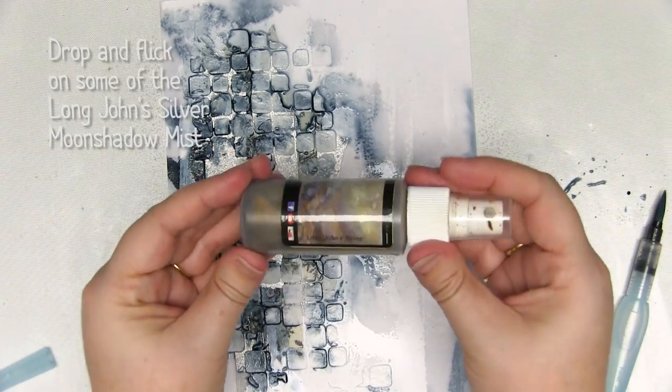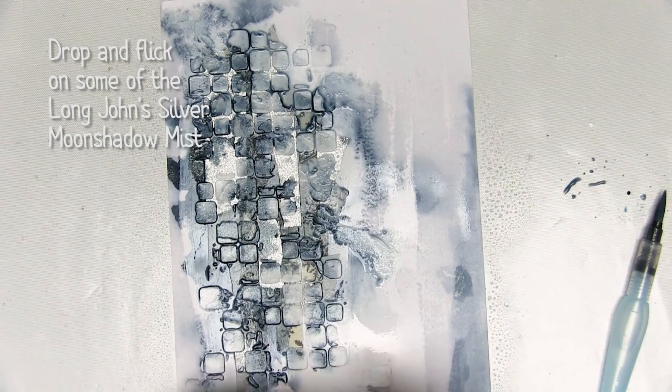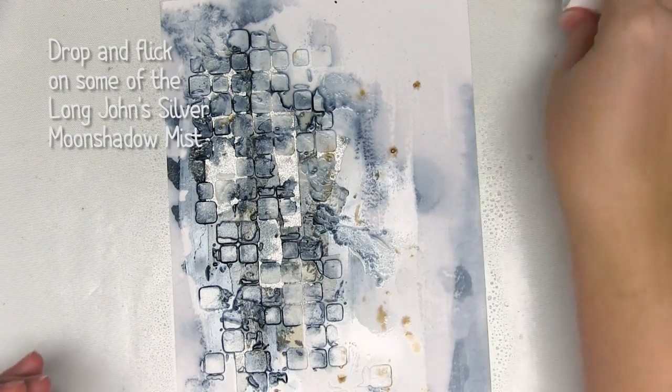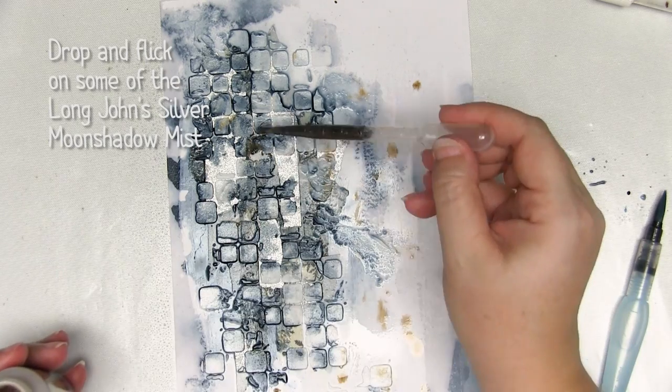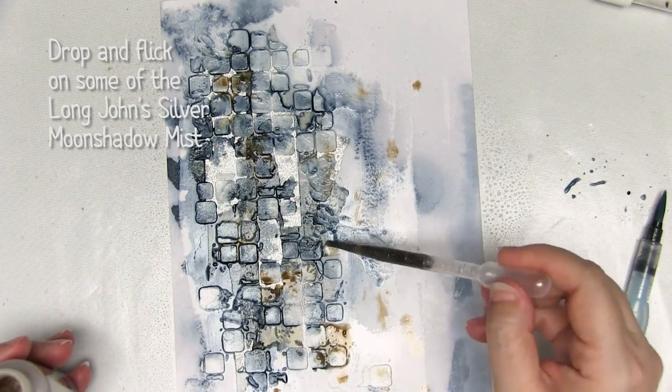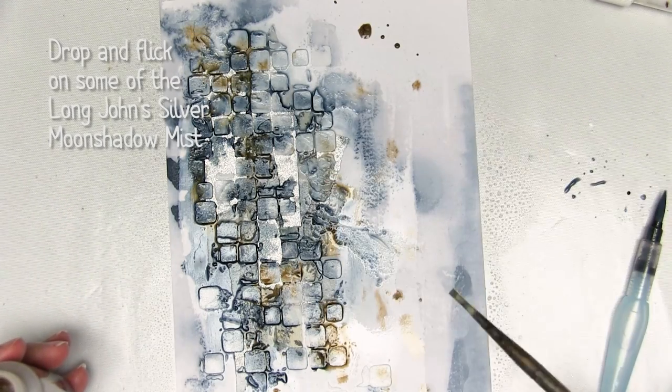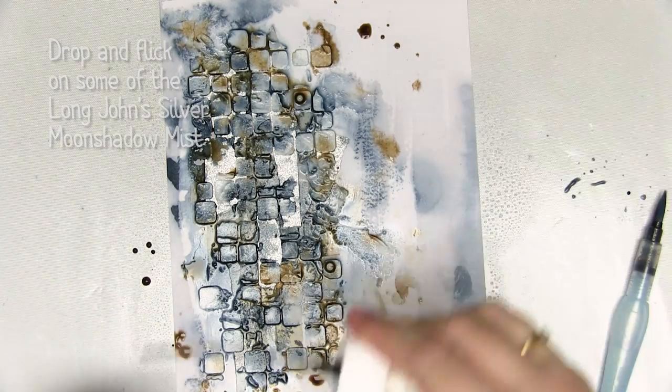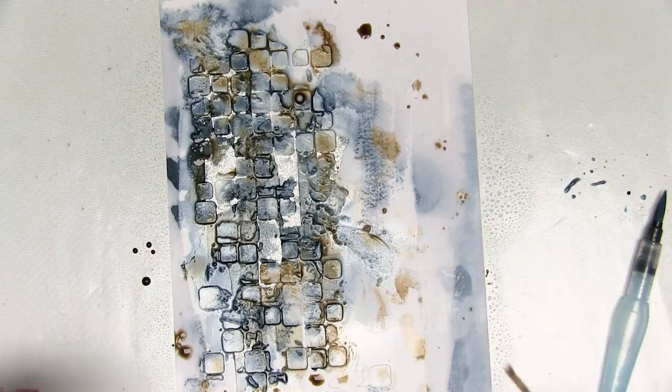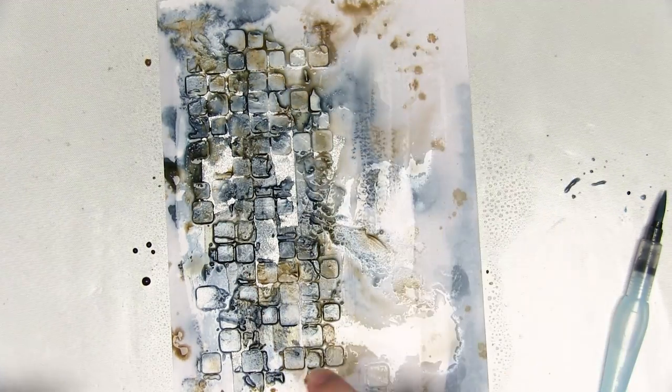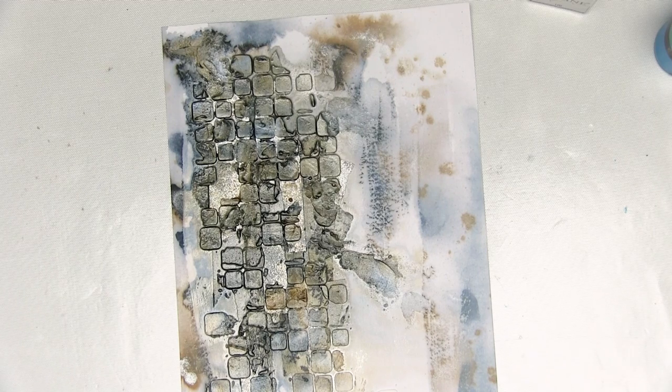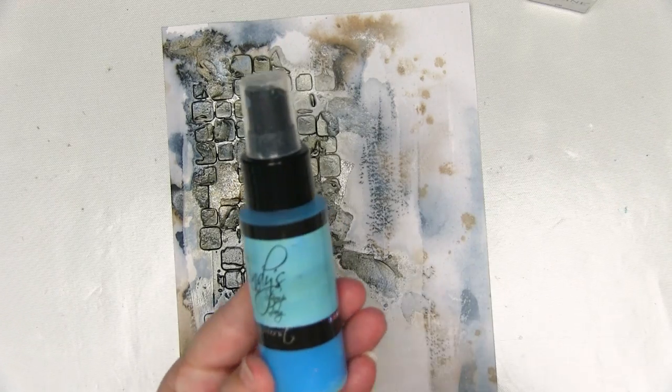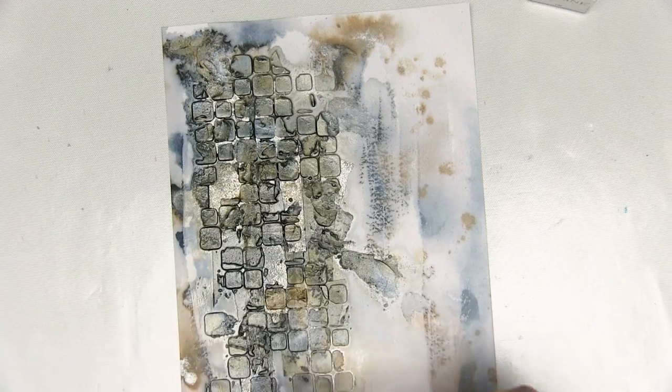That's the first layer, and now I'm going to add some of the Long John Silver. This is Moonshadow Mist, so it has quite a bit of brown in there, and it'll help balance this grey out. I'm going to add that in two different ways. I'm going to flick it on, and I'm also going to use a little eyedropper to add it in more concentrated sections. If any of that's too strong, you can either dilute it with some water or blot it off with a paper towel, but I quite like how that's going here.